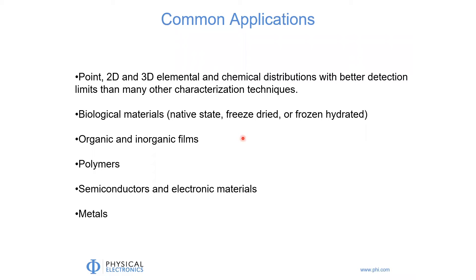Typically when we perform SIMS, we are trying to understand the elemental and chemical distributions within our sample. We can make those measurements at a single point, or because we can focus and scan the primary beam across our sample surface — much the same way we do an electron beam in an SEM — we can generate two-dimensional images of our surface containing the elemental and chemical distributions that we seek. Because we also have ion guns that allow us to etch material away and do in-depth studies, we can generate three-dimensional elemental and chemical distributions in our samples.